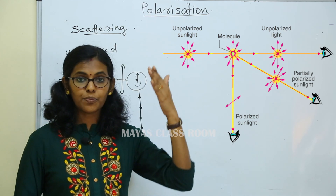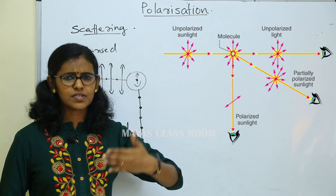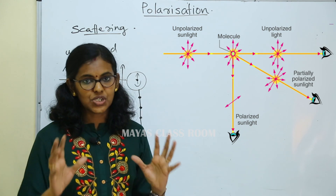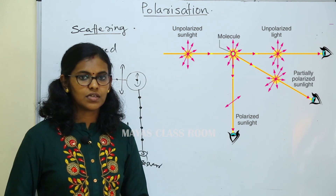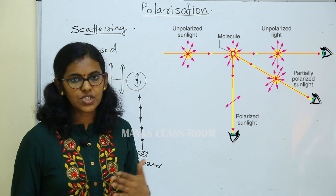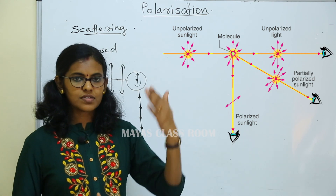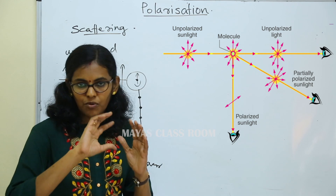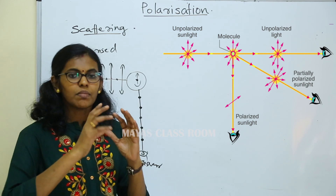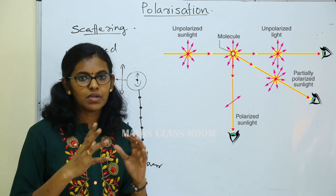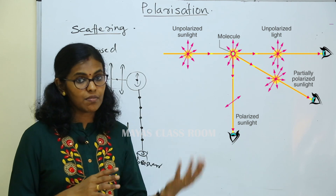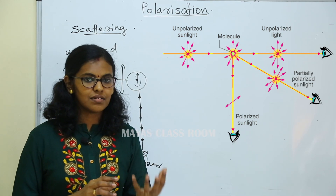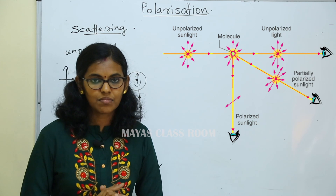We observe a blue light in the sky. We observe all the polaroids — they are large and thin sheets. There is a polarizing sheet. We observe the intensity; the polarizing sheet shows maximum intensity and minimum intensity.